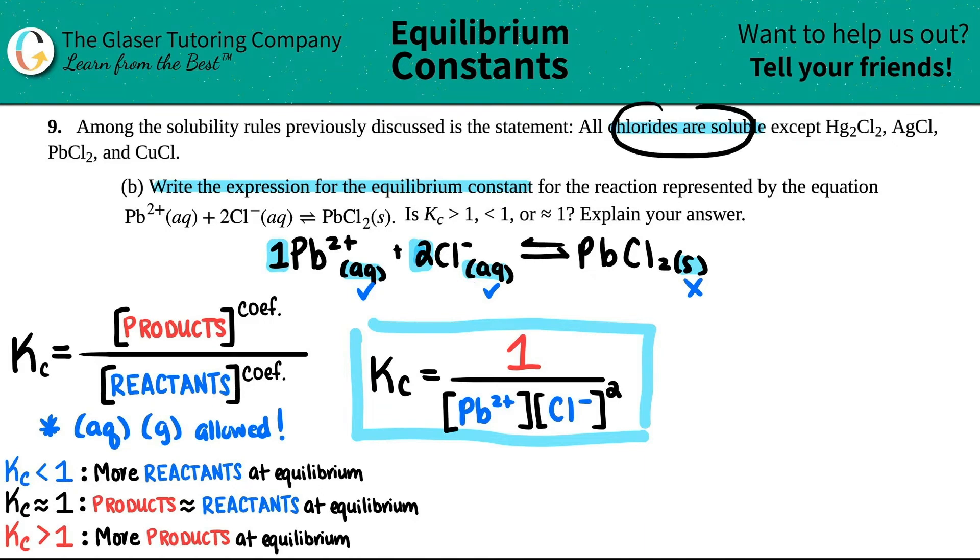Now the answer comes from what's going on here. They said that all chlorides are soluble except for these four exceptions. And here it is, PbCl2 is one of the exceptions. This means that this will not be soluble. This will be insoluble. And remember, when something is insoluble, it's literally a solid. It's a precipitate.